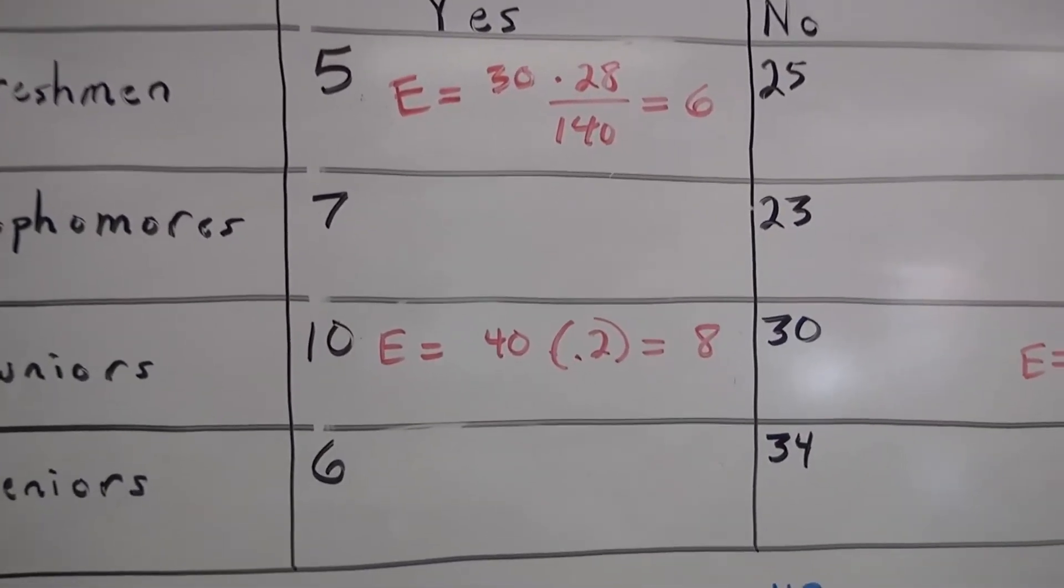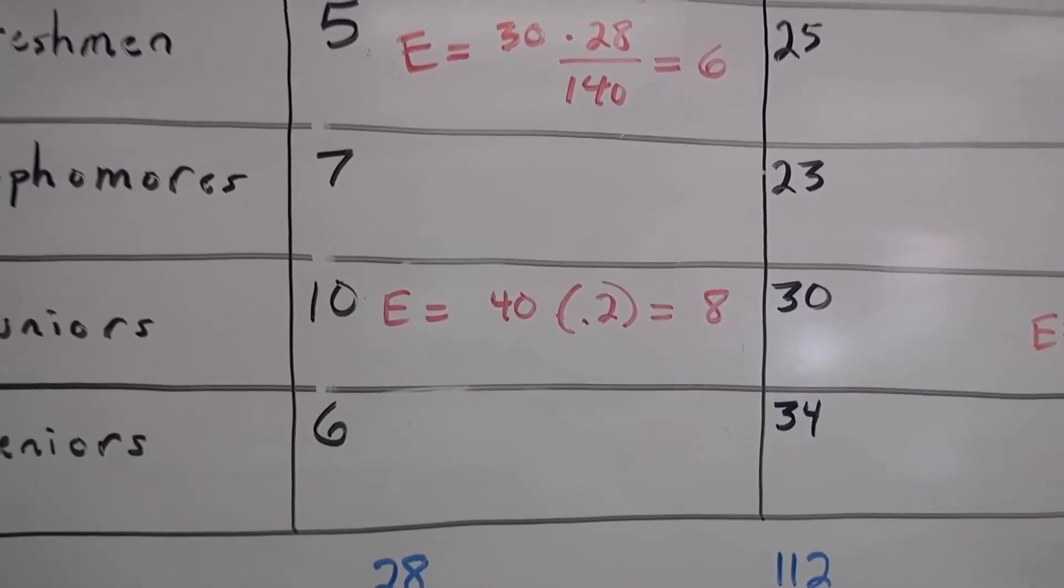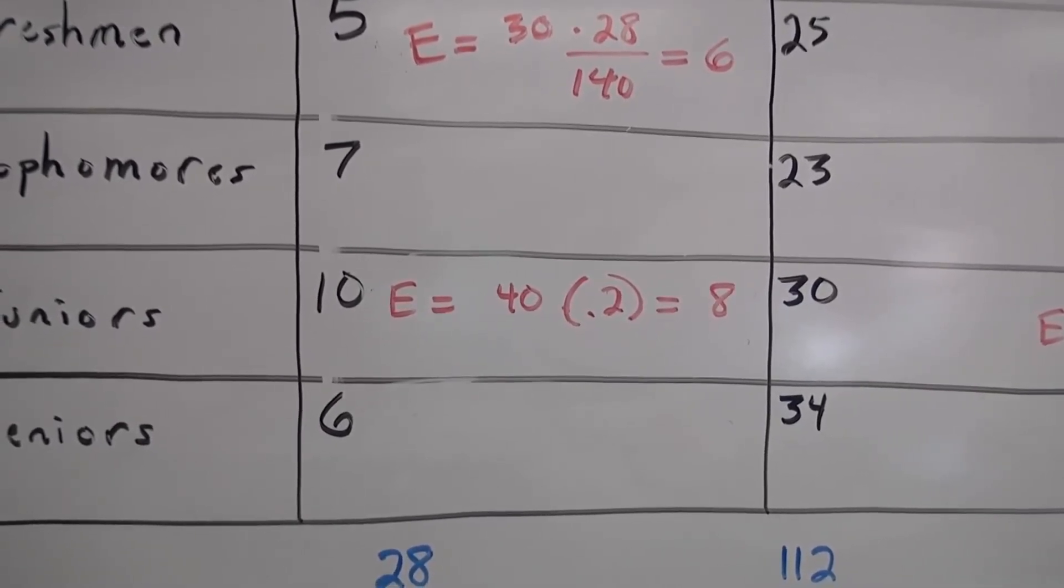If we go down here, we could do the row total of 40 times the P-hat of 0.2, because that's the column total divided by the grand total. So the expected count is 8.